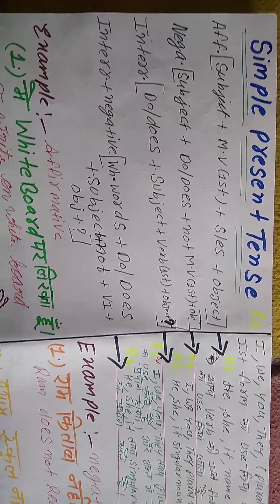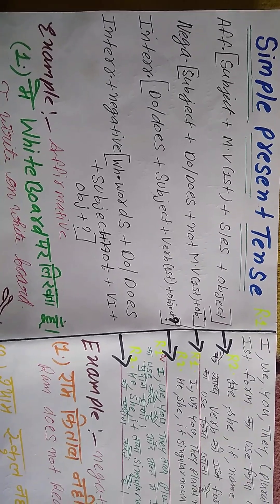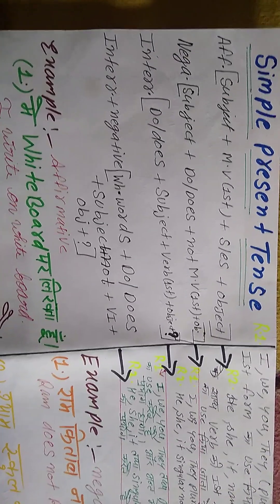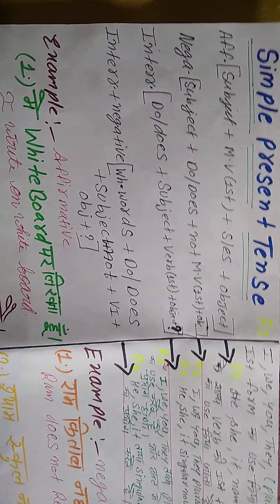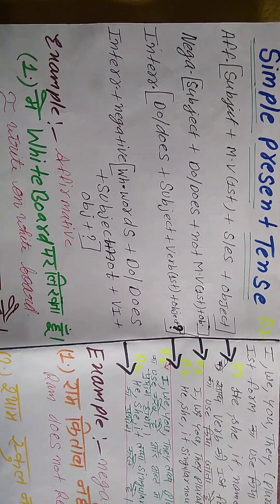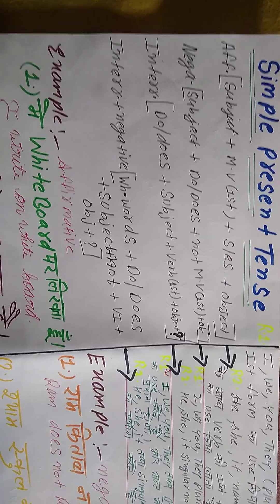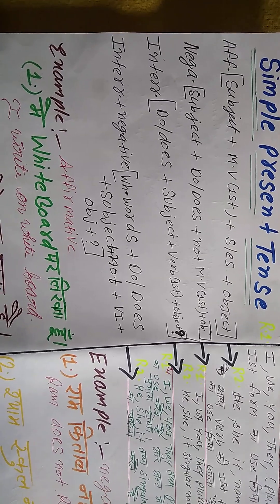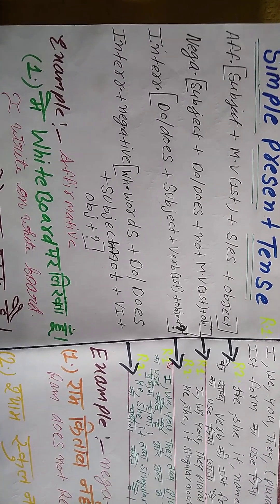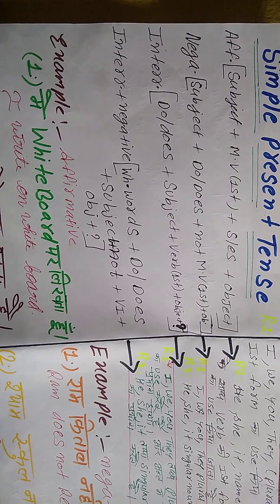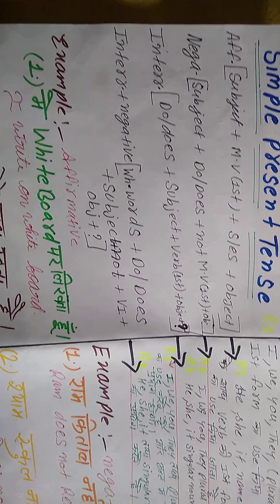सभी बच्चे नोट करते हुए चलेंगे. Negative: Subject + does + not + main verb (base form) + object. Interrogative: Does/Do + subject + verb (base form) + object + question mark.